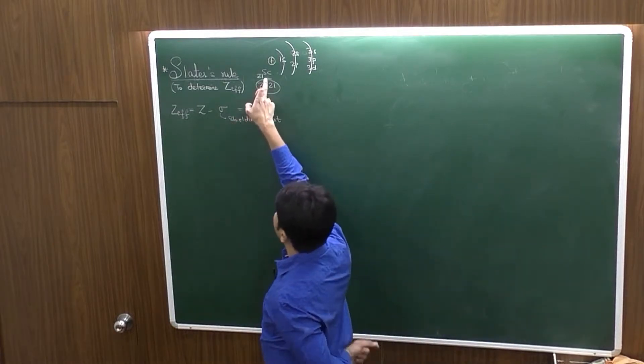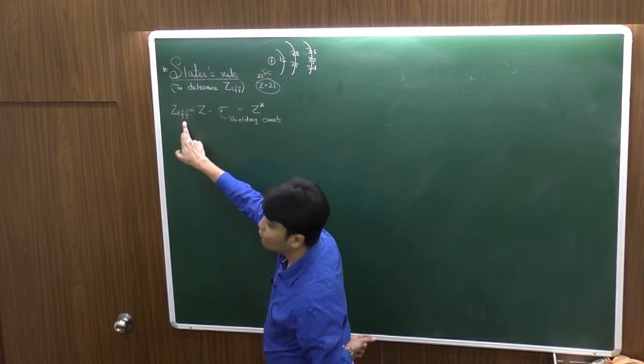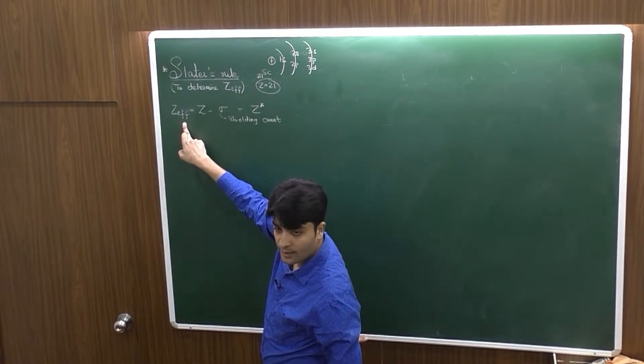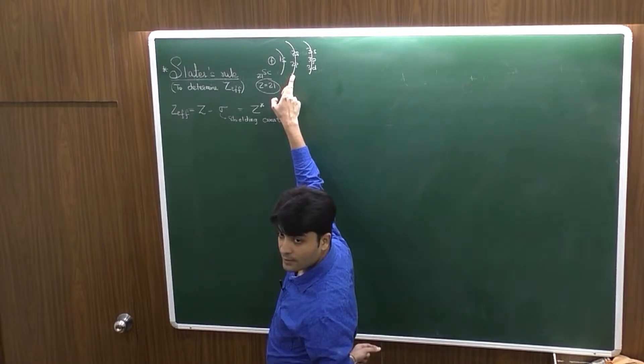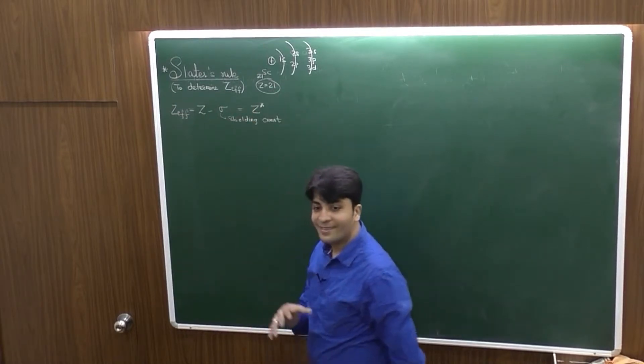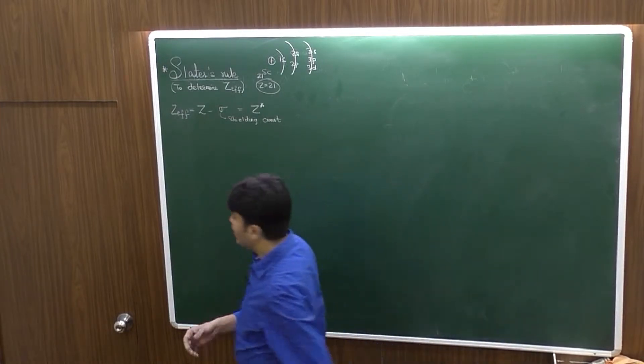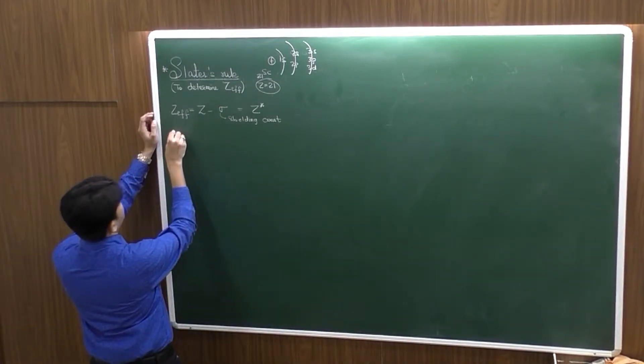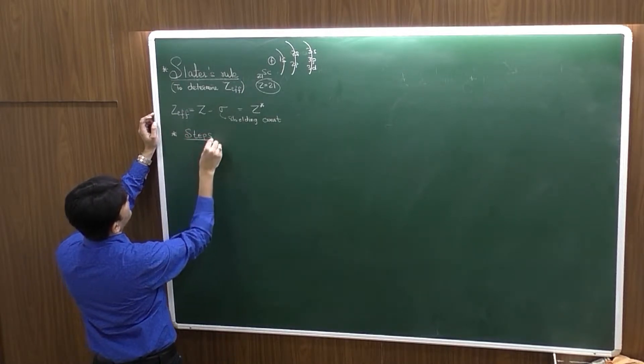For scandium, 1S can see all 21 protons, meaning the Zeff would be around 21. I am saying around because there is a reason. 2S, 2P, less than 21. 3S, 3P, 3D, even lesser than the value which we obtained for second shell electrons. Now how to calculate this Zeff, for that there are some rules.